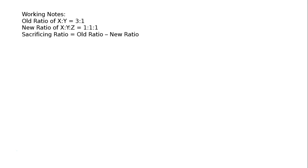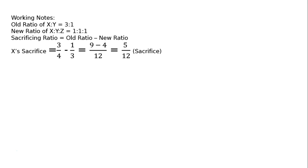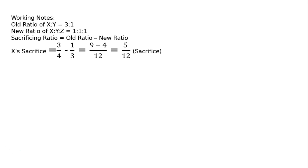Sacrificing ratio equals old ratio minus new ratio. X's sacrifice is 3/4 minus 1/3. Taking LCM as 12: 9/12 minus 4/12 equals 5/12. Y's sacrifice is 1/4 minus 1/3. Taking LCM as 12: 3/12 minus 4/12 equals minus 1/12. So Y actually gains.